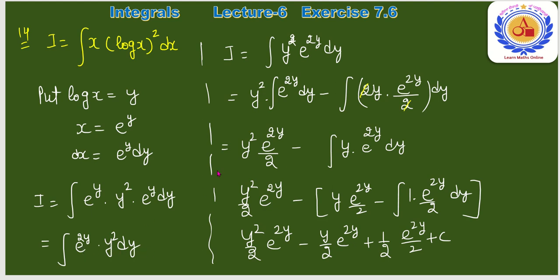y² polynomial है — first function। Formula: y²·e²ʸ/2 − ∫2y·e²ʸ/2 dy = y²·e²ʸ/2 − ∫y·e²ʸ dy। दोबारा by parts apply करना है।